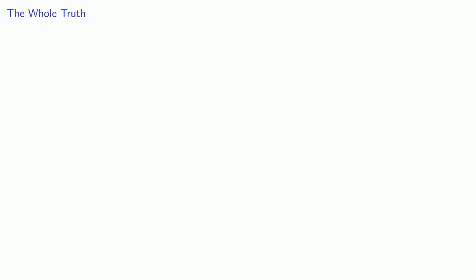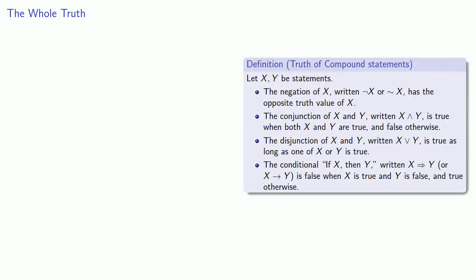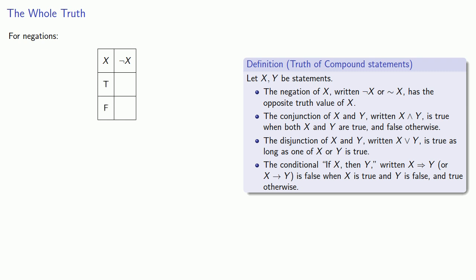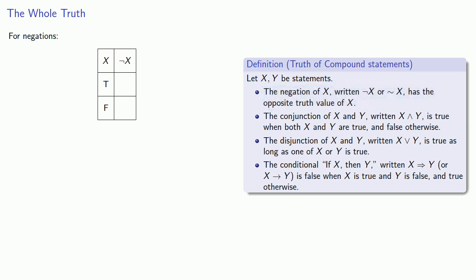We might begin by producing truth tables for the basic compound statements. For negations, we have a statement x and its negation, not x. The statement itself can either be true or false, and the negation will have the opposite truth value. So if the statement is true, not x will be false, and if the statement is false, the negation will be true.